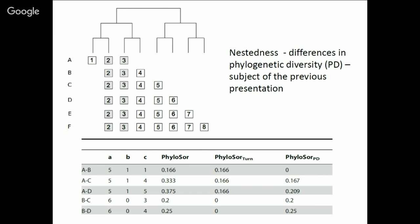Here is one more example from that same paper, showing different communities A through F where they're adding species. When you compare A to B, you have a value for phyloSor — the total one — and then phyloSor turnover and phyloSor PD, which is zero in the case from A to B. But if you look from A to C, phyloSor PD suddenly has a value because you have some nestedness.